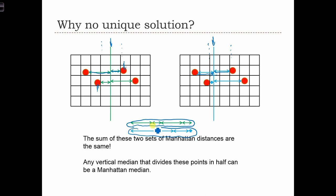And we see that the sum of the distances in this case, case 1, is equal to the sum of the distances in case 2. So in fact, any vertical median that divides these points in half can be a Manhattan median.